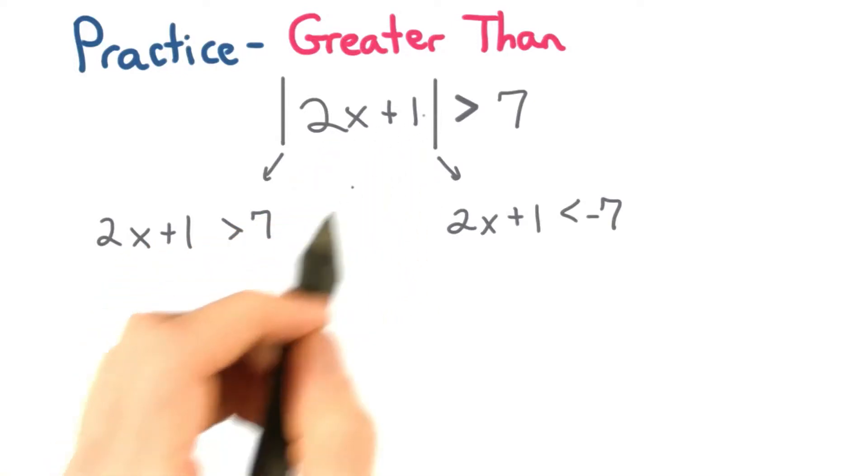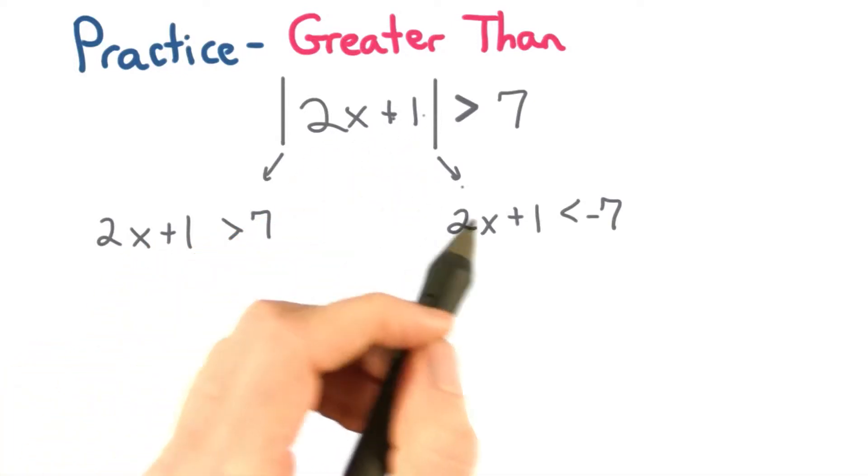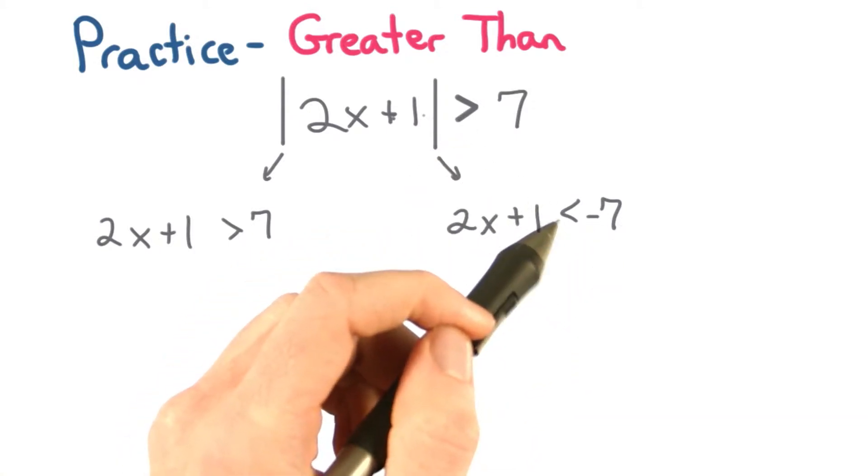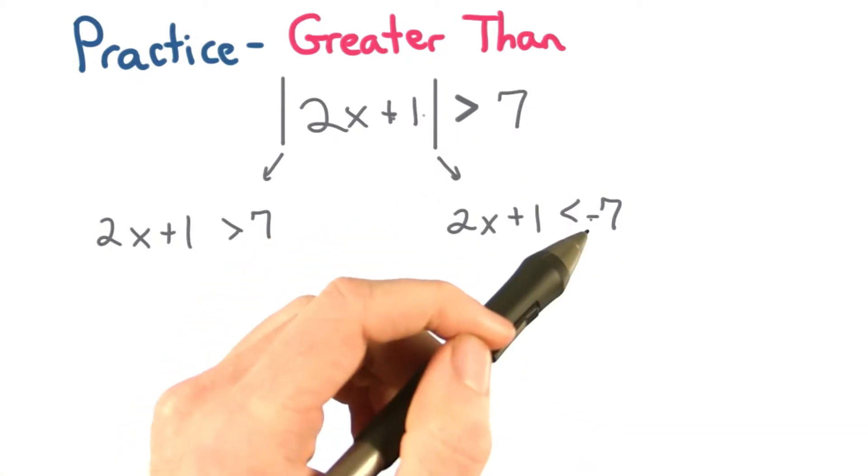We know this value inside needs to be greater than 7, or this value inside could be less than negative 7. Remember to catch that inequality sign. We have to reverse it for the negative answer.